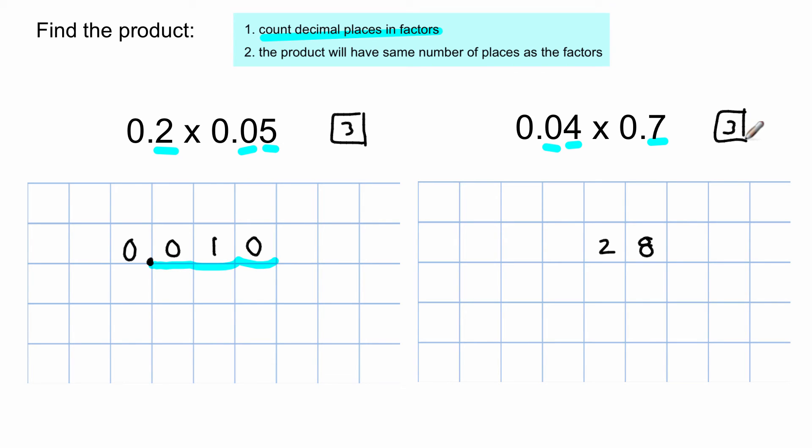After that, I'm going to count the decimal places from the right. This time I'm not going to use the highlighter. I'm going to use my pencil. So if I start here, I'm going to move over one space, two spaces, three spaces, and the decimal goes there.